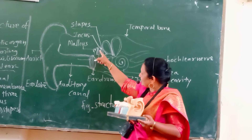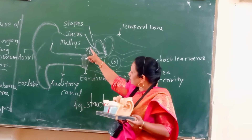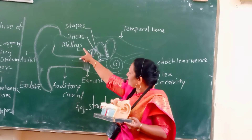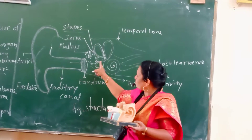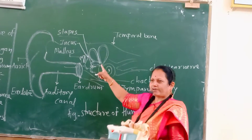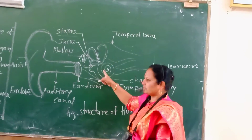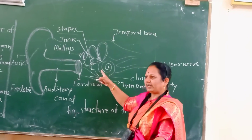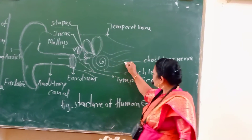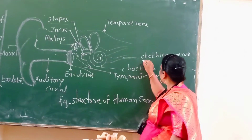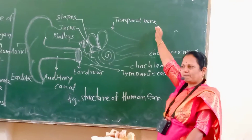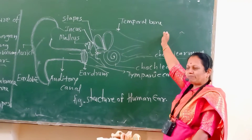Vibrations are produced and then reach the three ossicles: incus, malleus, and stapes. Then the vibrations travel to the cochlea and semicircular canal, and finally the sound waves are converted into impulses. That impulse is transported through the cochlear nerve to the brain.